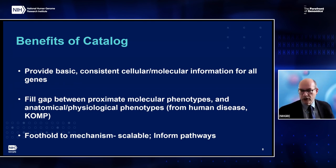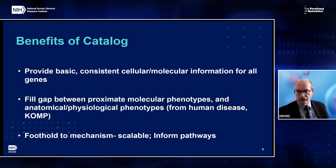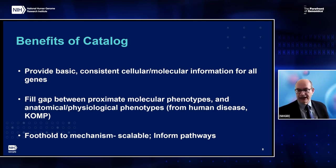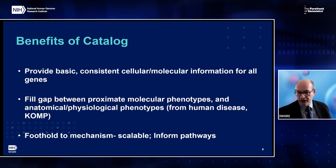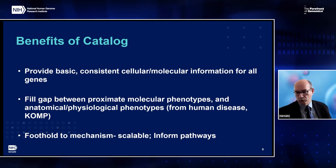Some general benefits: we are missing functional information for many genes, and MORPHIC seeks to establish a consistent base level for all. Even for genes where we know the associated anatomical or physiological phenotype and have some molecular phenotypes like expression data, there's usually a gap between the two that we don't understand well. MORPHIC will provide data that can help fill that gap. The question of how NHGRI will go beyond correlation and prediction to mechanism has come up in several recent functional genomics meetings — cellular and molecular data in multicellular systems can help with this. These data will also inform molecular and cellular pathways.